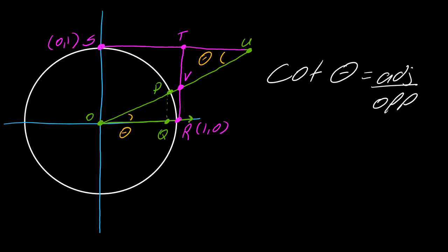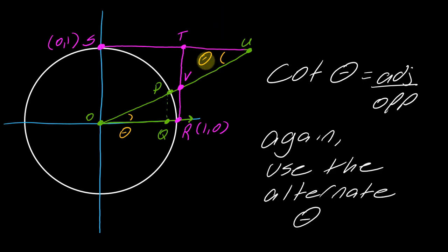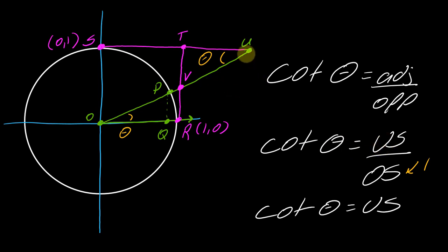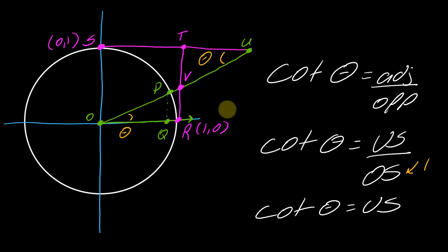Finally, cotangent is adjacent over opposite side. Continuing to use the alternate theta, my adjacent side is SU and my opposite side is OS. So cotangent of theta equals US over OS. Since OS equals one, cotangent equals the length of US. We've now found this relationship between the lengths of these line segments and the values of the trig functions.